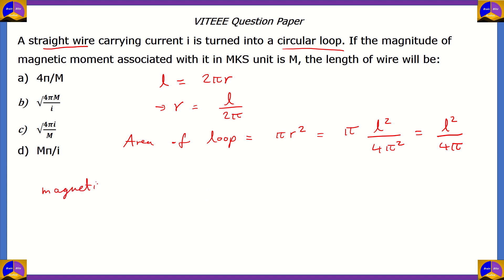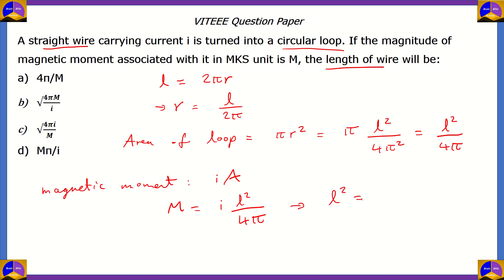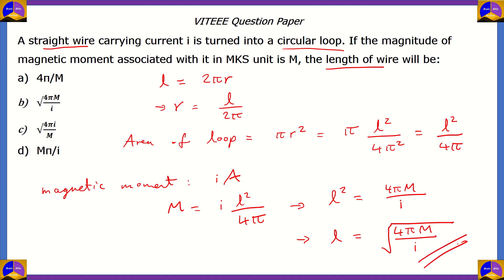How do we calculate the magnetic moment of a circular loop? The magnetic moment of a circular loop is the current passing through it times the area of that circular loop. So in this case, the current is I and the area is L squared divided by 4π. The magnetic moment in MKS units is M. We rearrange: L squared equals 4π times M divided by I. Taking the square root of both sides, the length of the wire equals under root of 4πM divided by I. So option B turns out to be the right option.